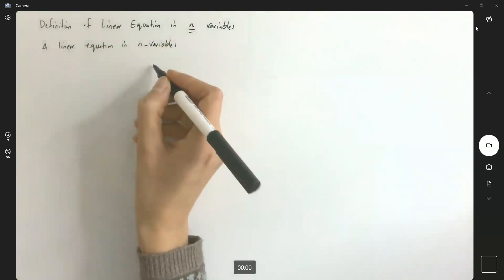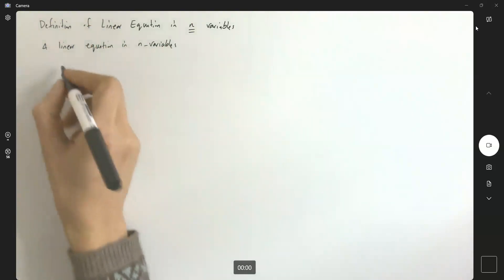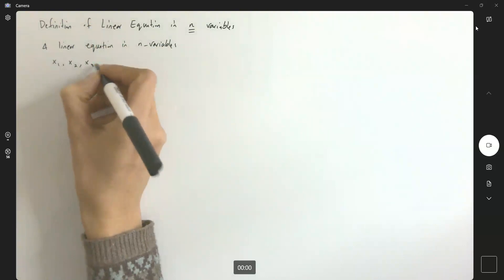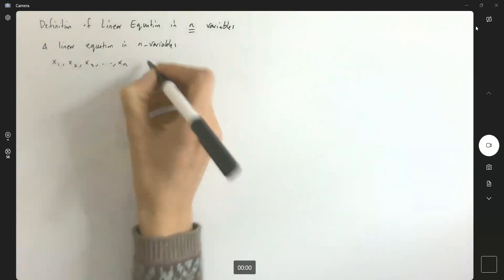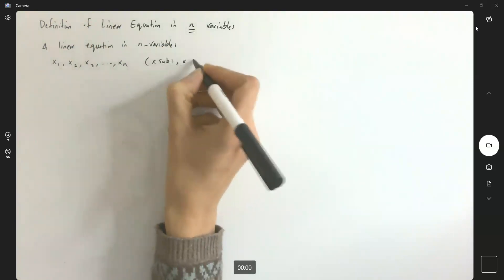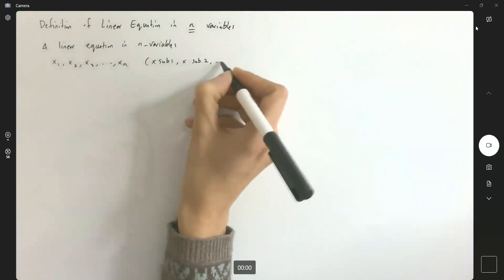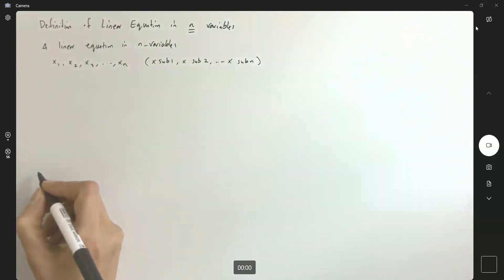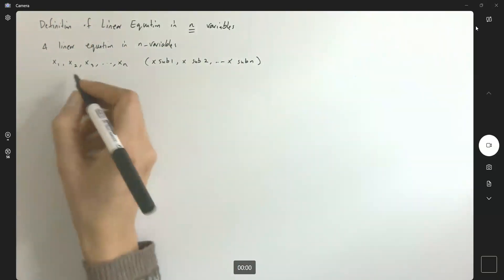These n variables, let us define them using x sub 1, x sub 2, x sub 3, and x sub n. So x sub 1, x sub 2, and x sub n has the form.